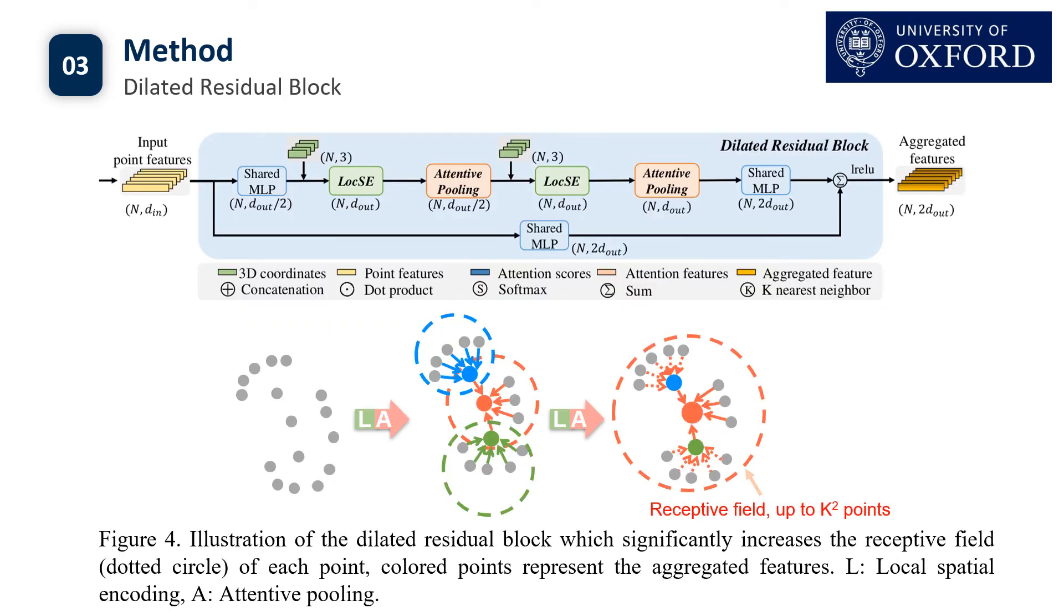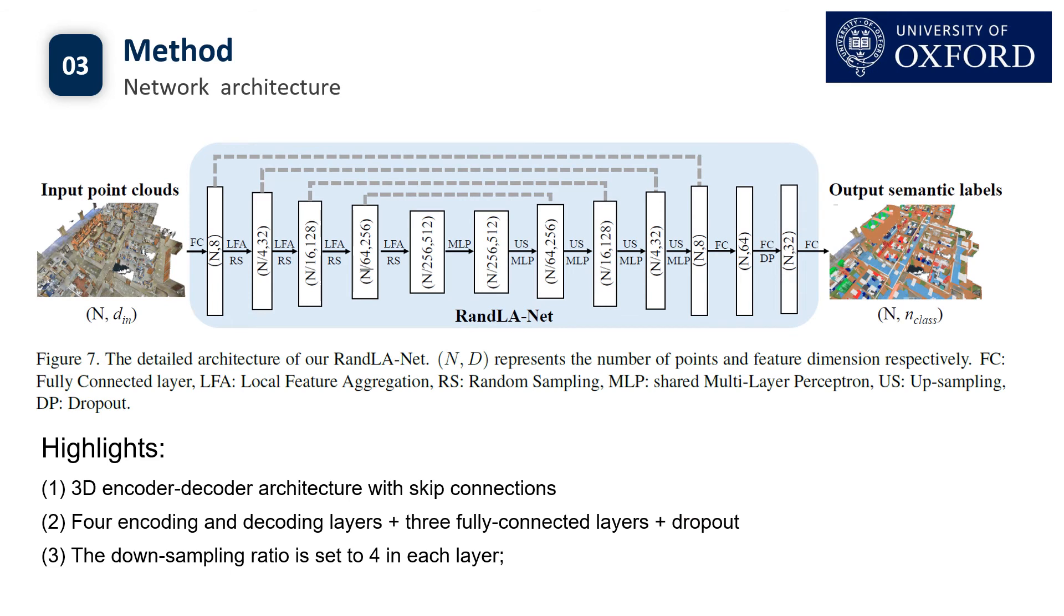And finally, we stack multiple local spatial encoding and attentive pooling units together with a skip connection as a dilated residual block. This is a cheap way of dilating the receptive field and expanding the effective neighborhood through feature propagation. Then we stack multiple local feature aggregation modules and random sampling layers together to build our RandLA-Net.